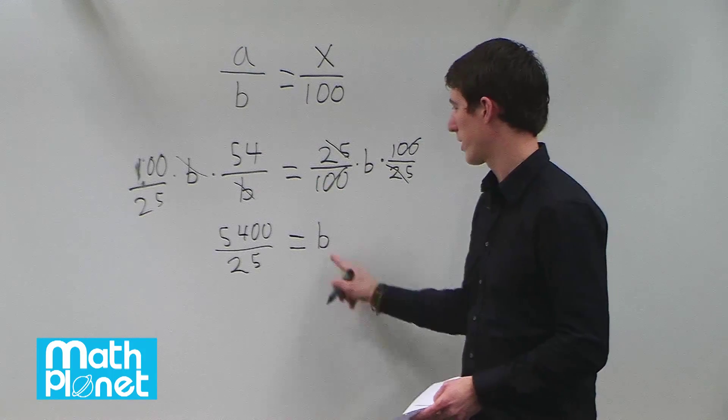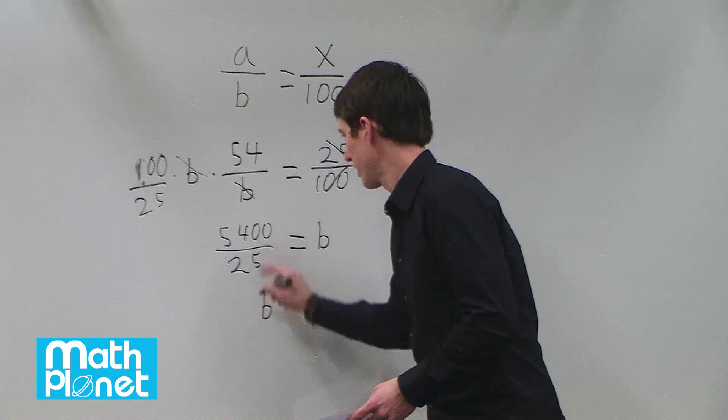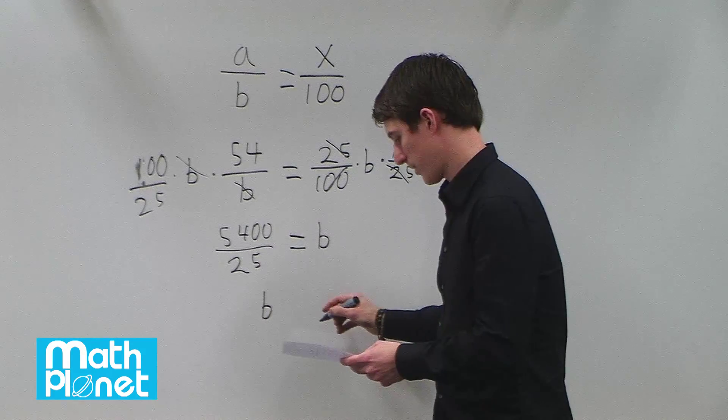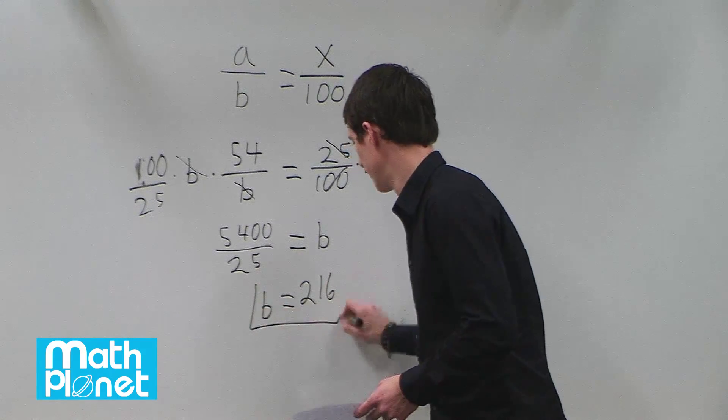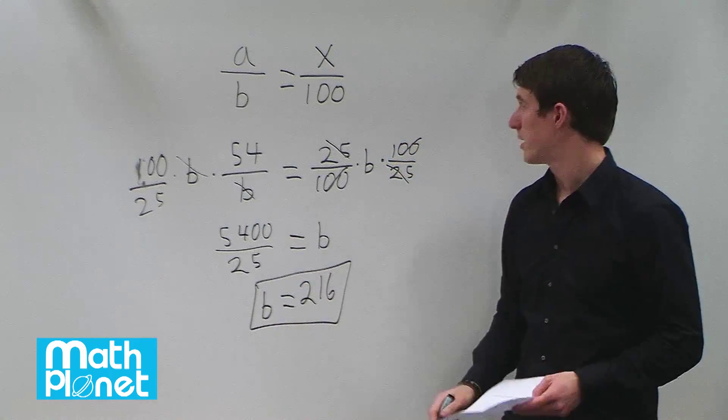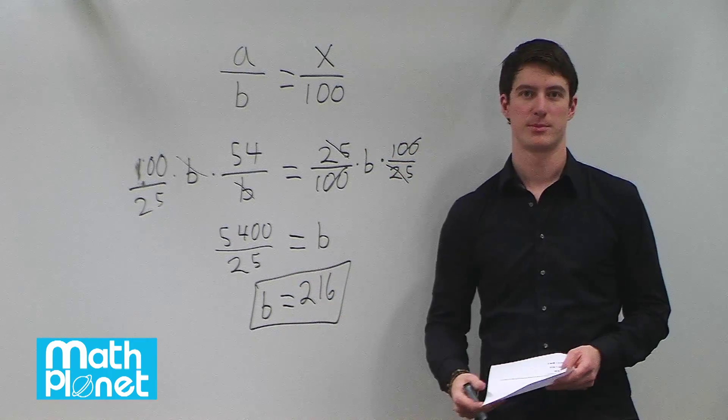So 54 is 25% of what number? That number is this division, which comes out to be 216. So 54 is 25% of 216.